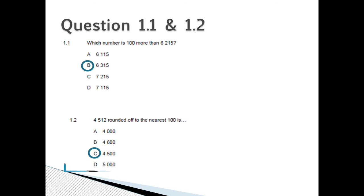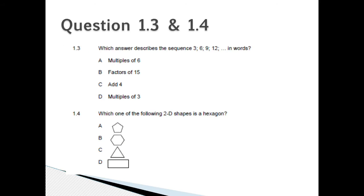Question 1.3: Which answer describes the sequence 3, 6, 9, 12 in words? Is it A. Multiple of 6, B. Factors of 15, C. Add 4, or D. Multiples of 3?